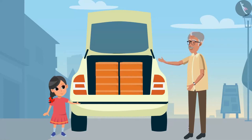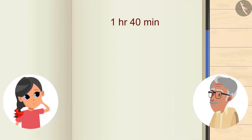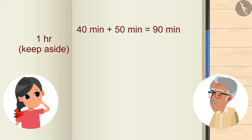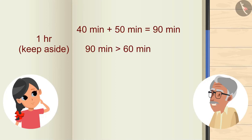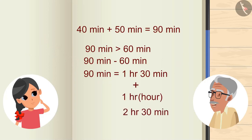Very good. Now a difficult question: can you add 50 minutes to the previous 1 hour 40 minutes? If we add 50 minutes to 1 hour 40 minutes, units of 40 and 50 are both in minutes, so we can add them together. 50 plus 40 is 90 minutes. But is 90 minutes greater than 60 minutes? Yes. So on subtracting 60 from 90 minutes we get 30 — that is 1 hour 30 minutes. Now add this 1 hour 30 minutes to the previous 1 hour. So now we get 2 hours 30 minutes.